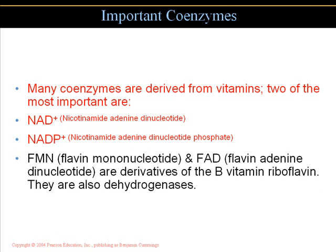Many coenzymes are derived from vitamins. Two important ones are derived from nicotinamide: NAD (nicotinamide adenine dinucleotide) and NADP, which is a phosphorylated form of NAD. Another type is FMN (flavin mononucleotide), which combines with FAD (flavin adenine dinucleotide). These are derivatives of the B vitamin riboflavin. They are also dehydrogenases, helping to release hydrogen from various reactions. So coenzymes NAD, NADP, FMN, and FAD are all examples derived from vitamin B.